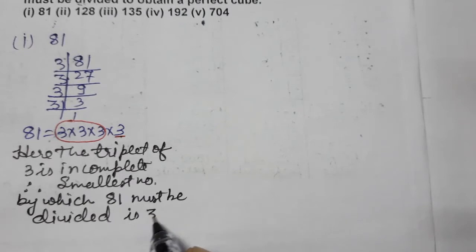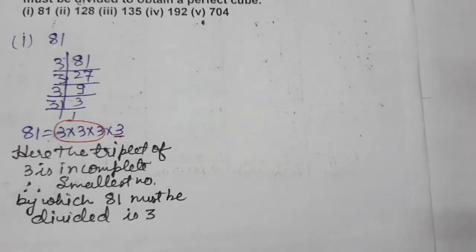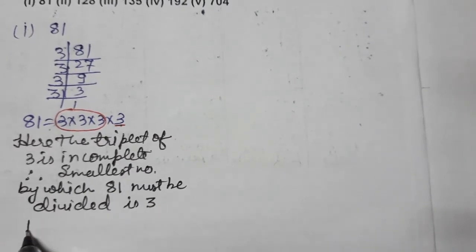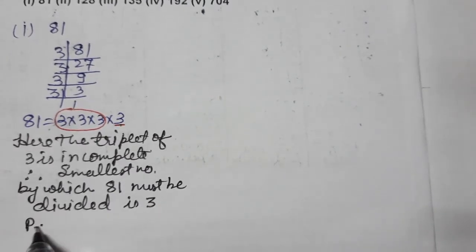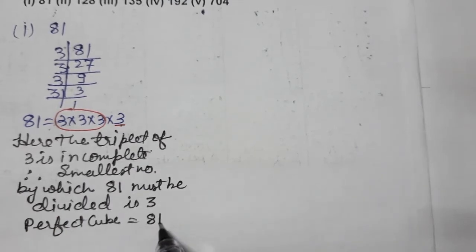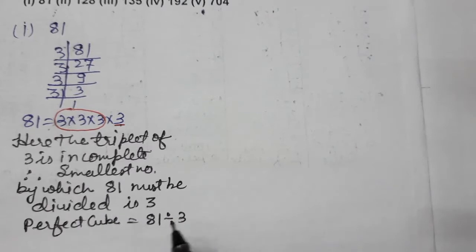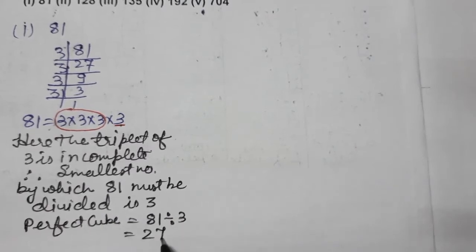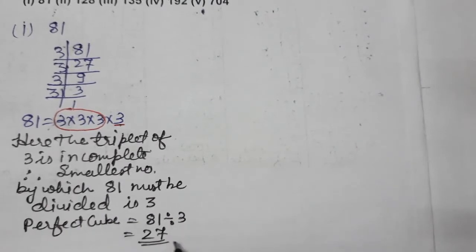We can also find the perfect cube. 81 divided by 3 gives us 27. So 27 is the perfect cube. Now we'll do the second part.